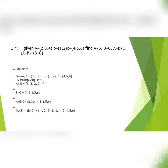The solution to the given problem: A equals 2, 3, 4, B equals 1, 2, and C equals 4, 5, 6. By multiplying sets, the value of A plus B is 1, 2, 2, 3, 4.